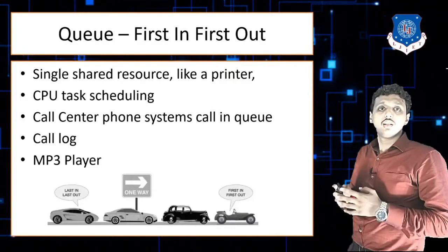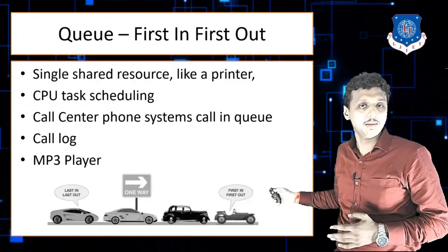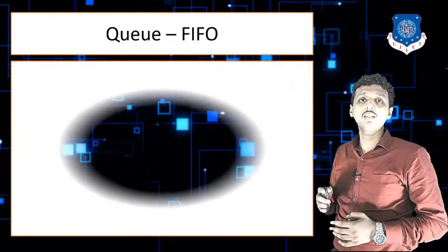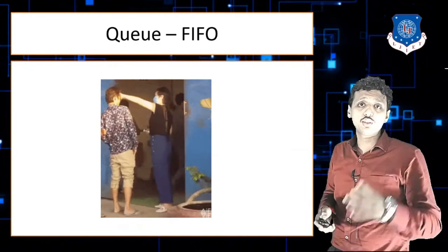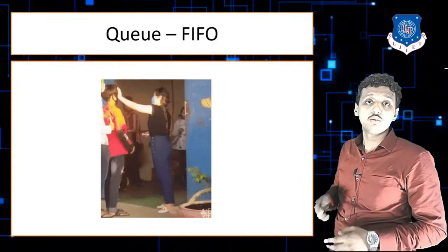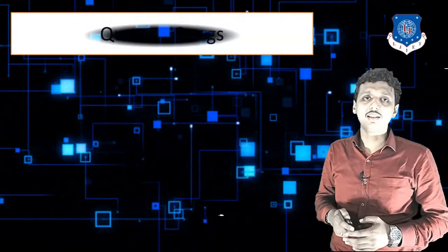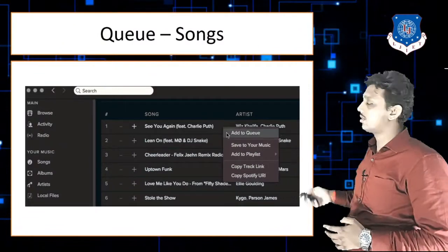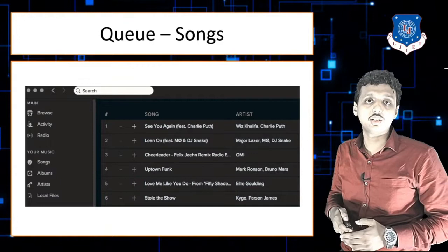Queue follows FIFO — first in, first out — which is the same as last in, last out. In this image you can see people standing in a queue and going out one by one — that is the best example of FIFO. Another example is your song playlist: songs play in sequential manner according to your playlist selection.